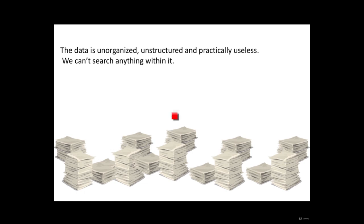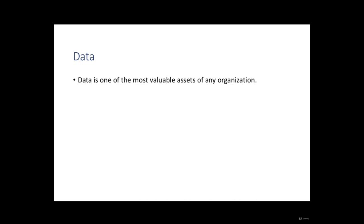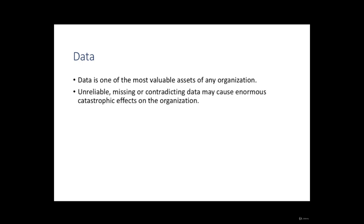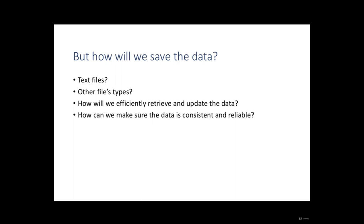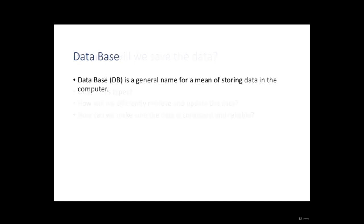So how will we solve it? Data is one of the most valuable assets of any organization, and it is clear that unreliable, missing, or contradicting data may cause enormous catastrophic effects on the organization. The data must be saved. But as we saw in our small story, how will we save the data — in text files, other file types? And besides, how will we efficiently retrieve and update the data? How can we make sure the data is consistent and reliable? Those are important questions, and the answer is the database.